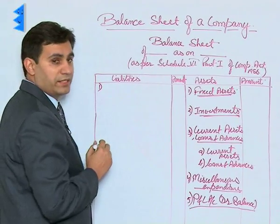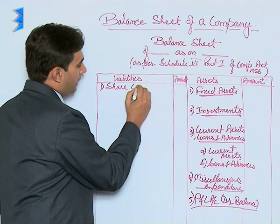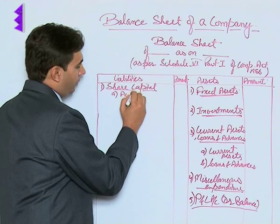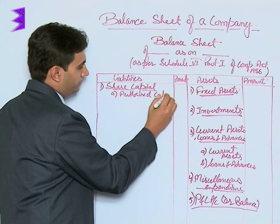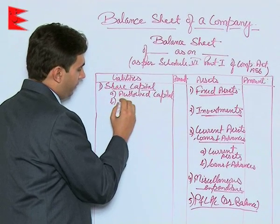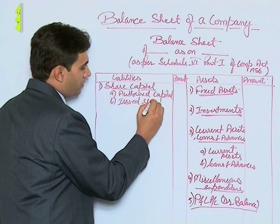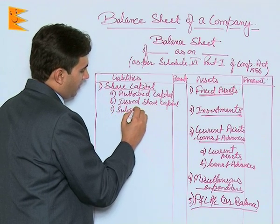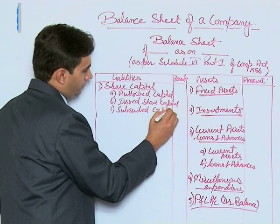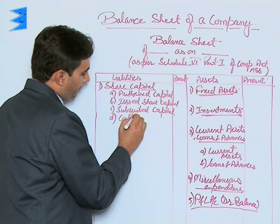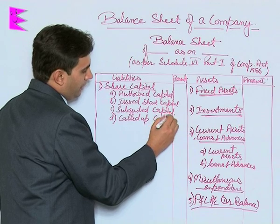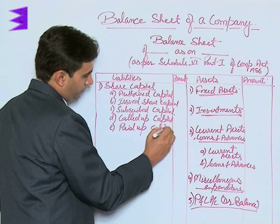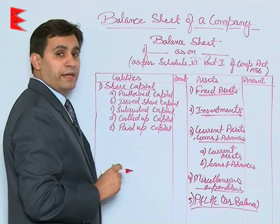The first major heading on the liability side is share capital. It has various subheadings: authorized capital, issued share capital, subscribed share capital, called up capital, and lastly paid up capital.